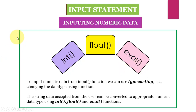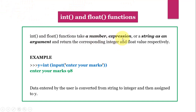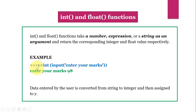The int() and float() functions take a number expression or string as an argument and return the corresponding integer and float value respectively. For example: y = int(input("Enter your marks")). The input statement executes first, displays the prompt, and suppose I enter 98. The input statement returns 98 as a string, then int() converts it to an integer, which is then stored in variable y. So y will refer to 98.